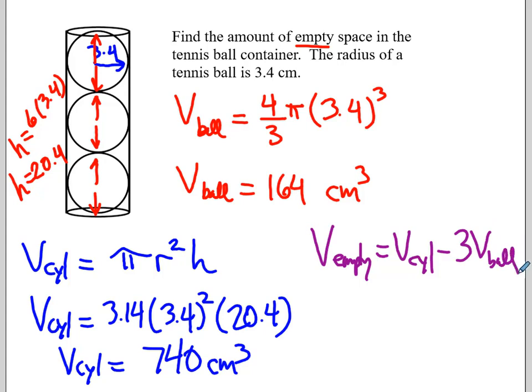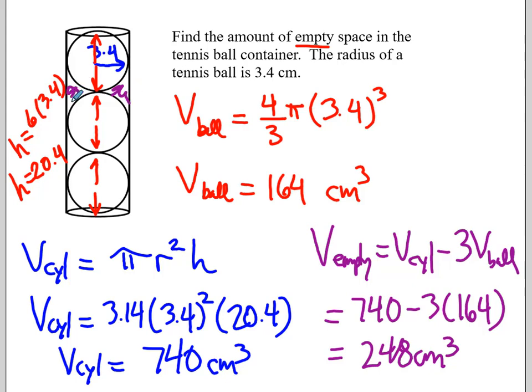We're using that same composite area concept. Now we're doing it with composite volume. So we have 740 as the cylinder minus 3 times 164. So the amount of empty space would be 248 cubic centimeters, all inside these little spaces in here.